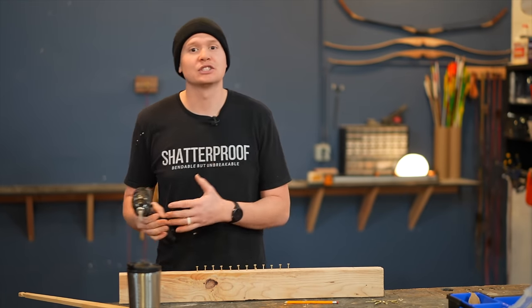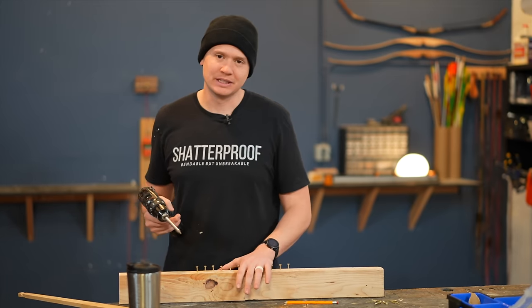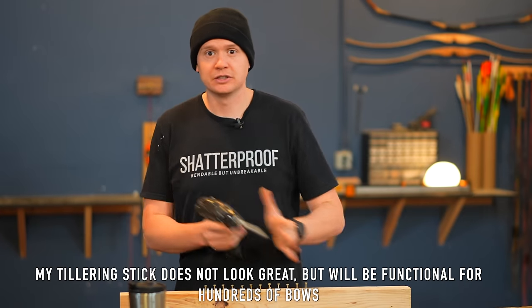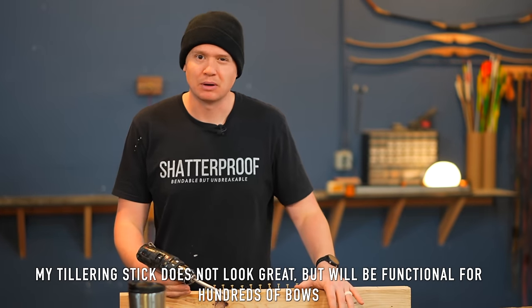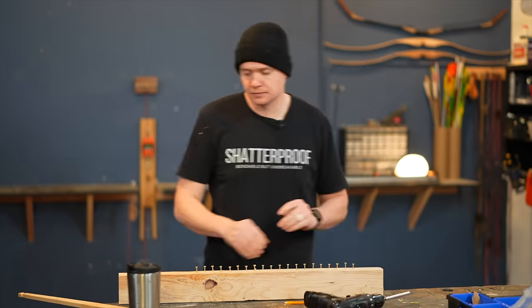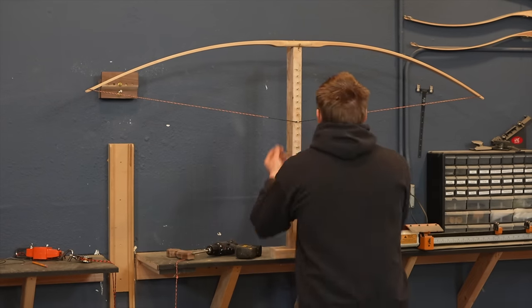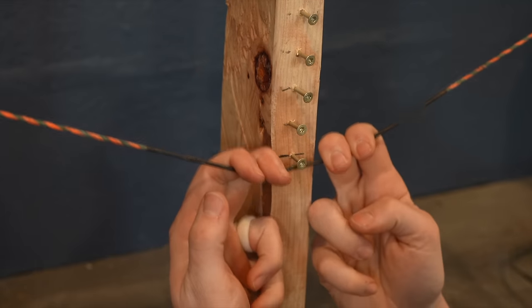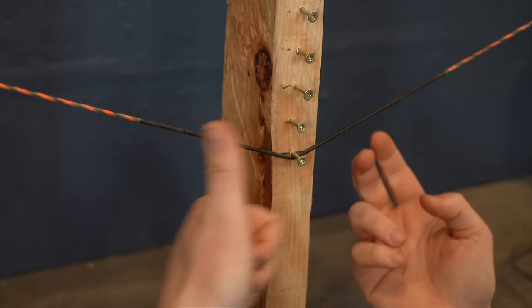But if I plan on making a lot of bows in the future, or you like to build really cool jigs, you could build a really cool tillering stick or a really cool tillering tree. But if your goal is to get a finished bow as quick as possible, this is probably the way to go. Perfect. I've got all the screws in. Now I know when I draw the bow down on this tillering stick, all I have to do is get to the bottom screw. Once the bow is at the bottom screw, I can shoot it.